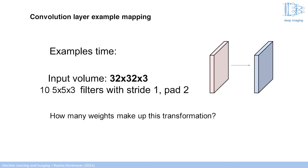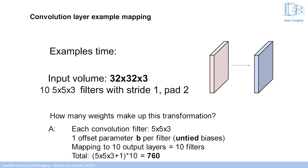TensorFlow includes a scalar offset under the hood. For each filter, you have the values within the matrix that perform the convolution and then a single scalar offset that can globally shift the value of the entire operation up and down. That leads to 760 unique weights TensorFlow will optimize. When you initialize your network, the filters are all random so they won't look like anything useful, but as you iterate the weights will change to give you useful values in that first layer.